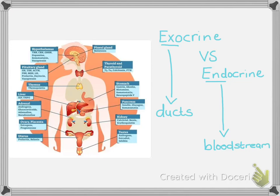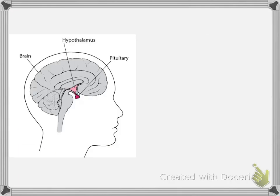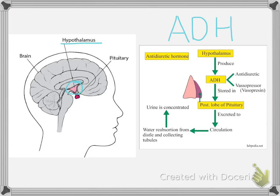Let's move into the very first gland we are going to cover, which is the hypothalamus. The hypothalamus is located within the brain and sits just above the pituitary gland. The hypothalamus is very closely associated with the pituitary gland, and they actually work together as partners in controlling your hormone levels. We need to focus on specific hormones for each gland and their functions.